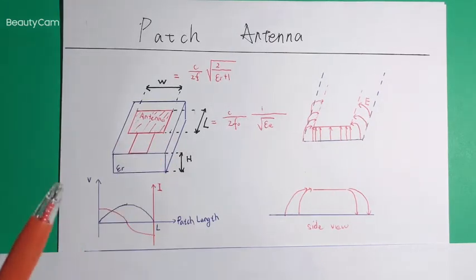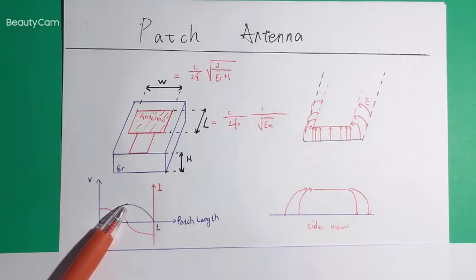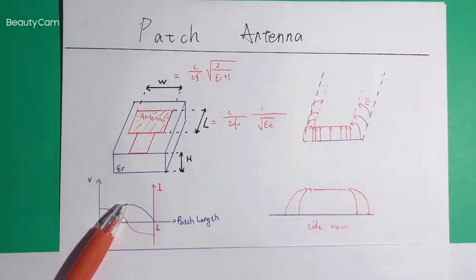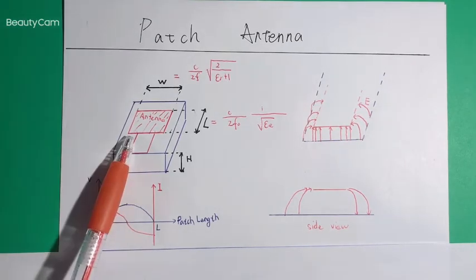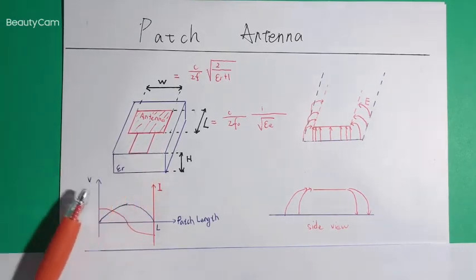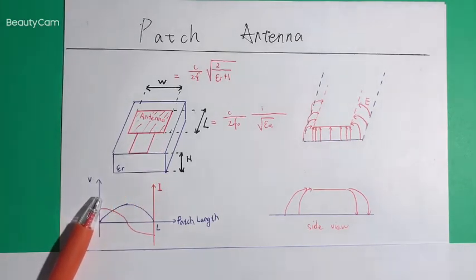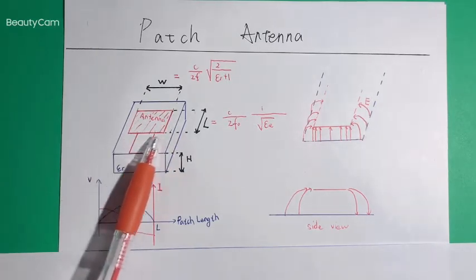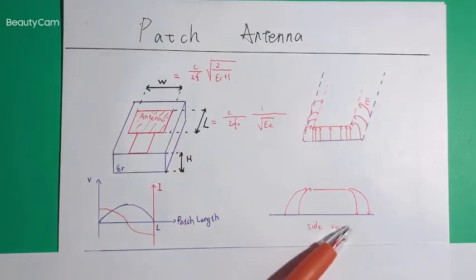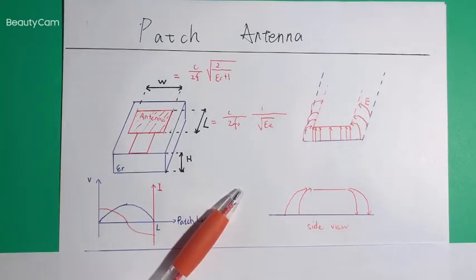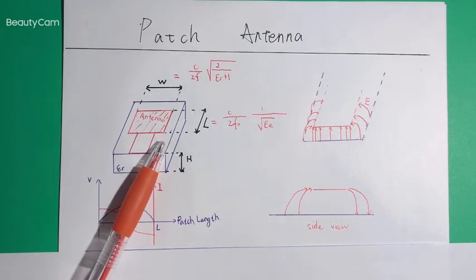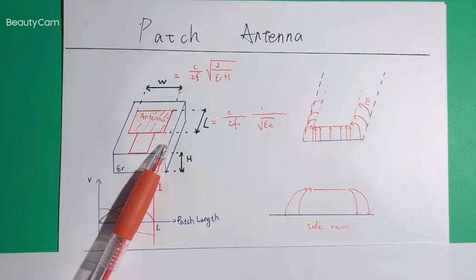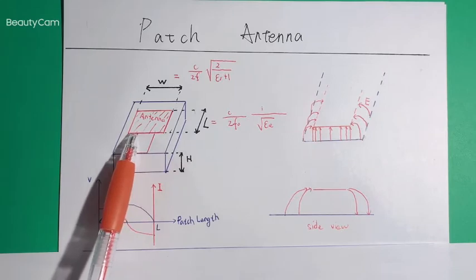This is easy to understand since this patch antenna is somewhat similar to the microstrip line, and a microstrip line does not radiate or almost does not radiate — consistent with what we learned. But these two edges will radiate, as shown here.